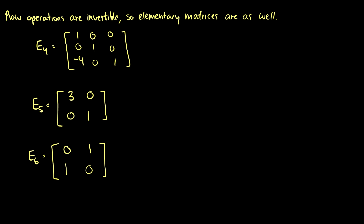We have 1s in all the diagonals, so it's leaving the rows alone. But we see here we have this negative 4. So this elementary matrix represents R3 becoming R3 minus 4 times row 1. This entry is in the first column, so it deals with the first row, and it's in the third row position, so it affects the third row of our result. So how do we do the inverse? Well, for our inverse, we want R3 to become R3 plus 4R1.